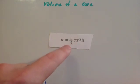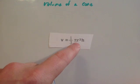So that's 1 third of pi times r squared, the radius squared, times the h, or the height.